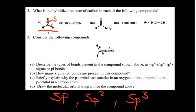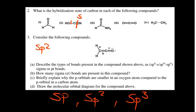Proceeding to the next compound, we look at how many connections carbon has. The triple bond is counted as the first one — that's s — and then the other connection is p, so that carbon is sp hybridized. For the third compound: s, p, and p — so it is sp2, just like the first one. Then the fourth: s and p, so that is sp hybridized.